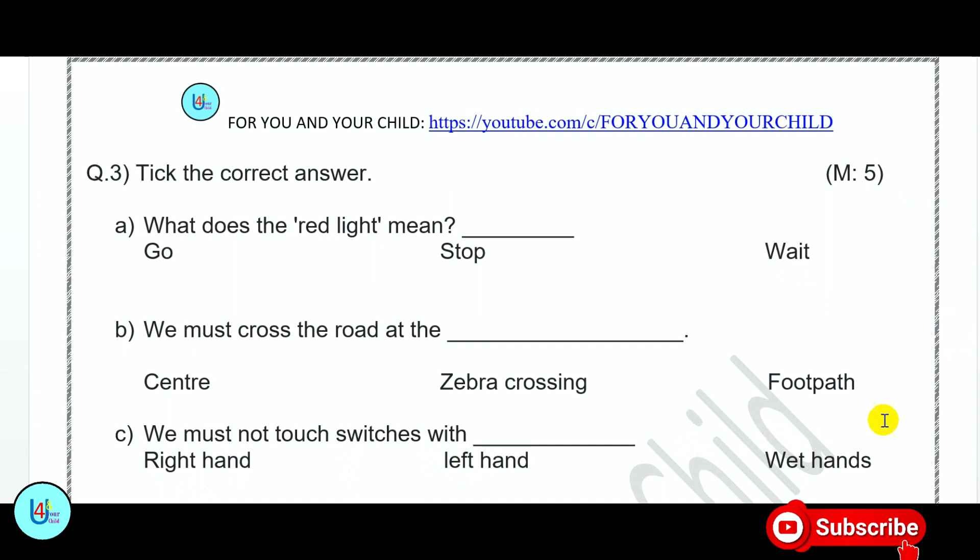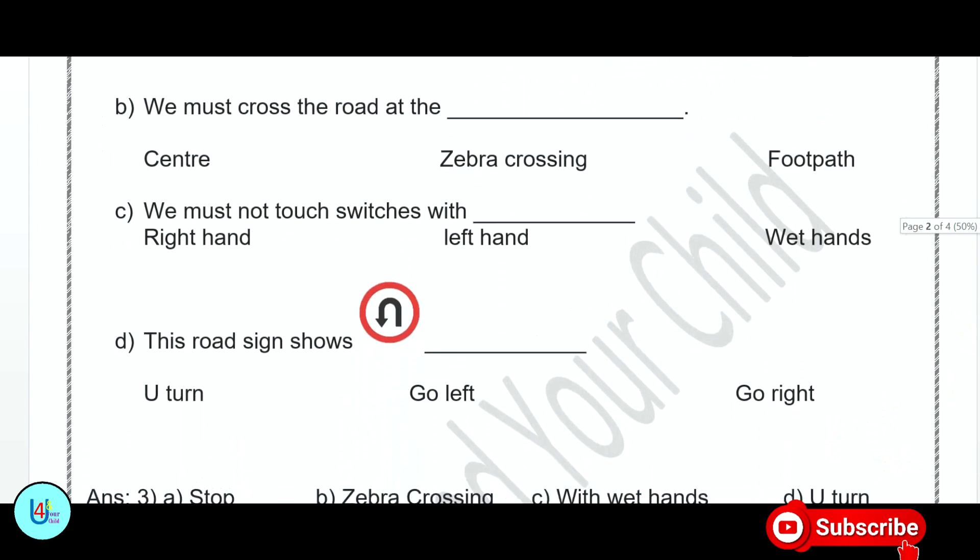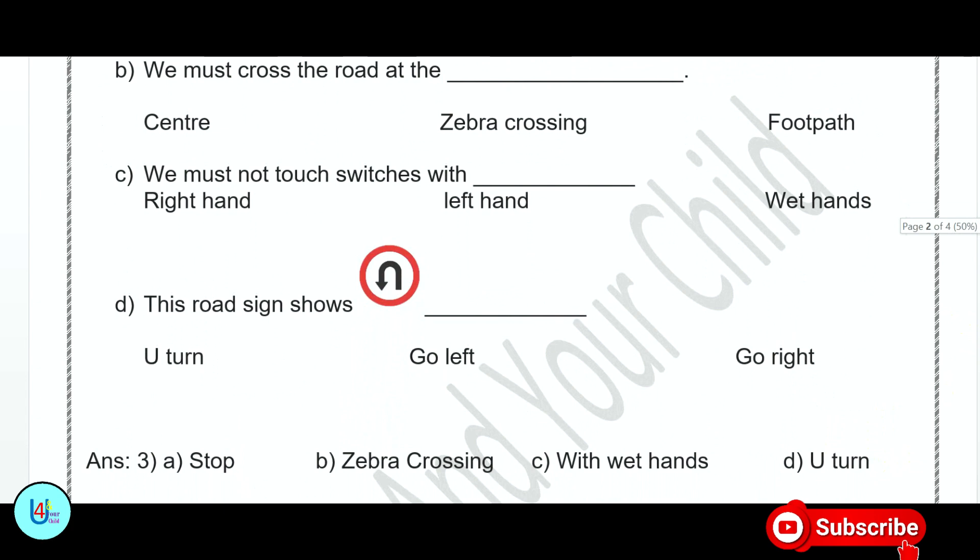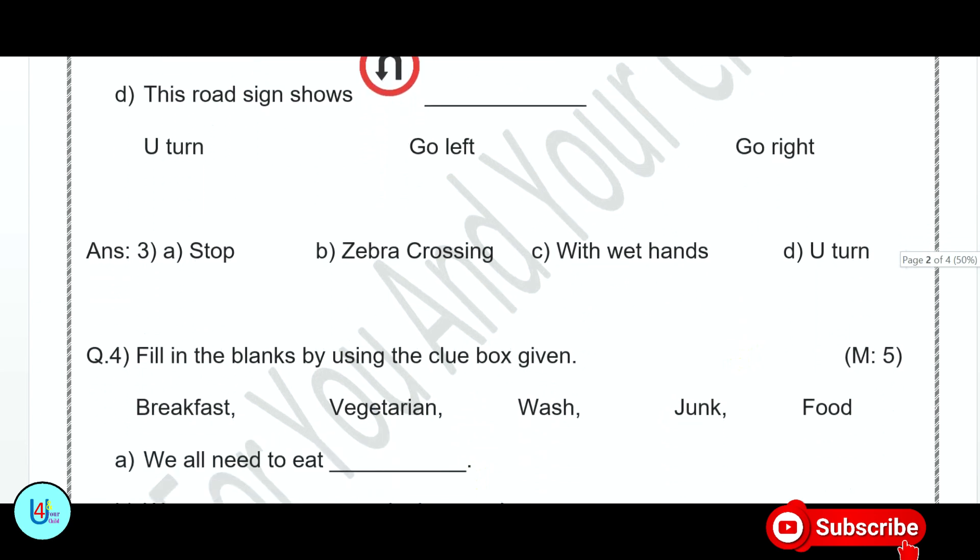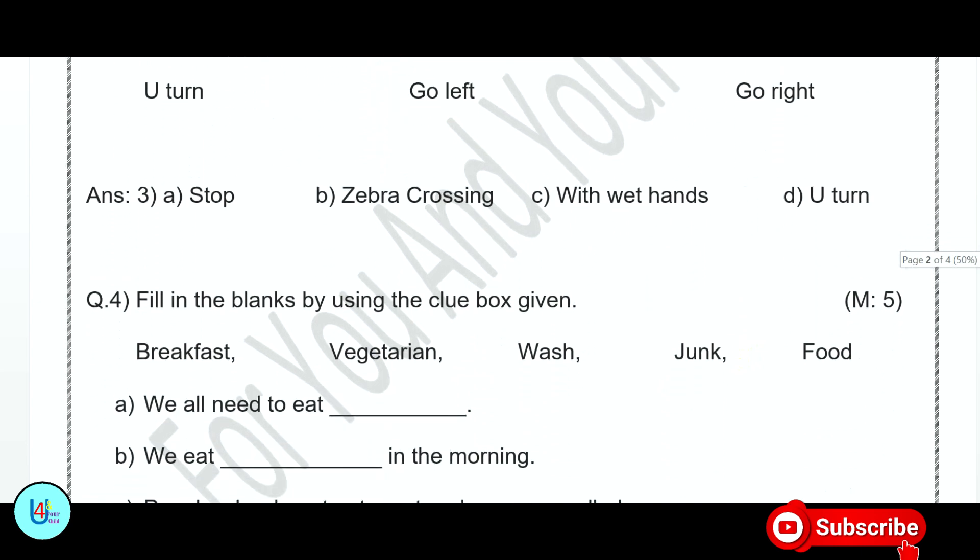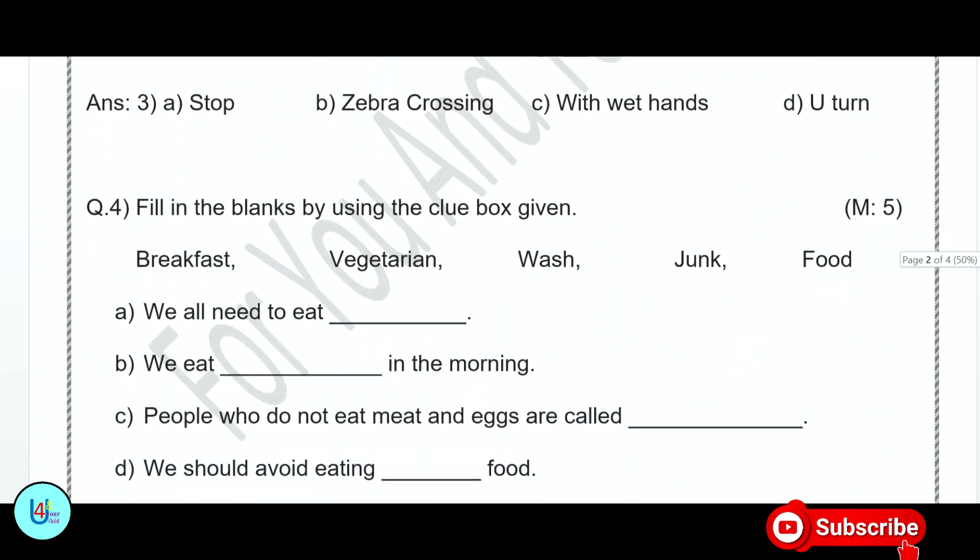Center, Zebra crossing, footpath. Answer is Zebra crossing. We must not touch switches with right hand, left hand, wet hands. The answer will be wet hands. We should not touch switches with wet hands. This road sign shows You turn. Question number 4: Fill in the blanks by using the clue box given. There are some words given in the clue. We all need to eat food. We eat breakfast in the morning.